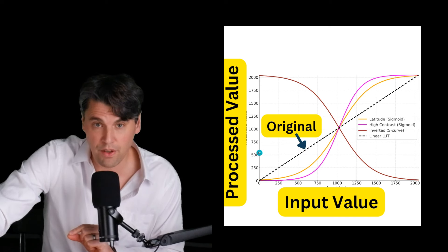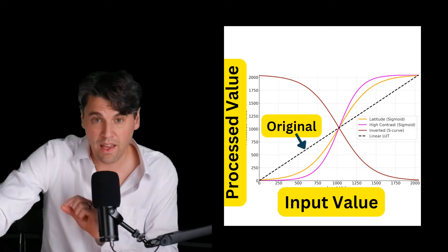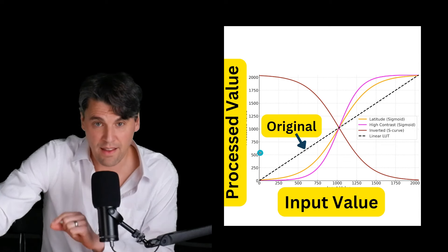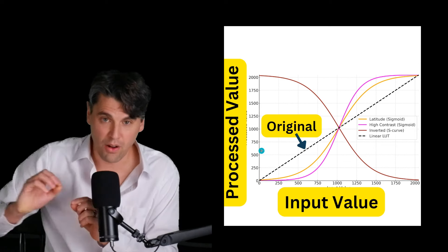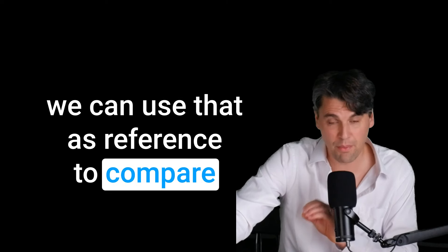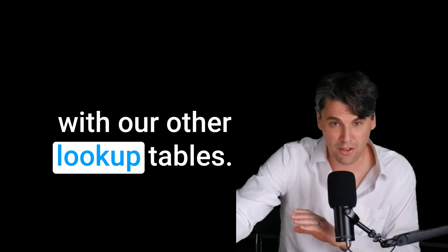You can see that in the original image for each pixel, if it starts with 500 input, you get 500 as output. So this is what we call the identity line. We can use that as reference to compare with our other lookup tables.